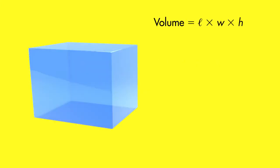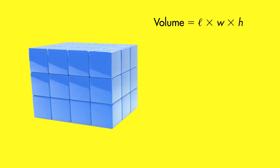We can think of a rectangular prism as being made up of unit cubes. Because the side lengths of this prism are in fifths, we will use cubes that measure one-fifth of an inch on each side.